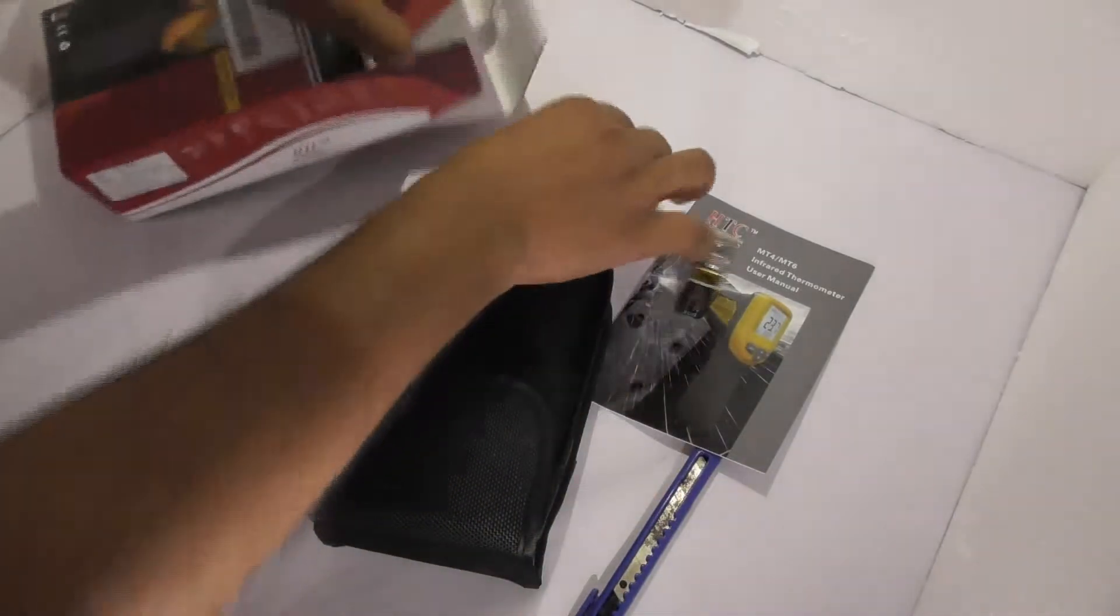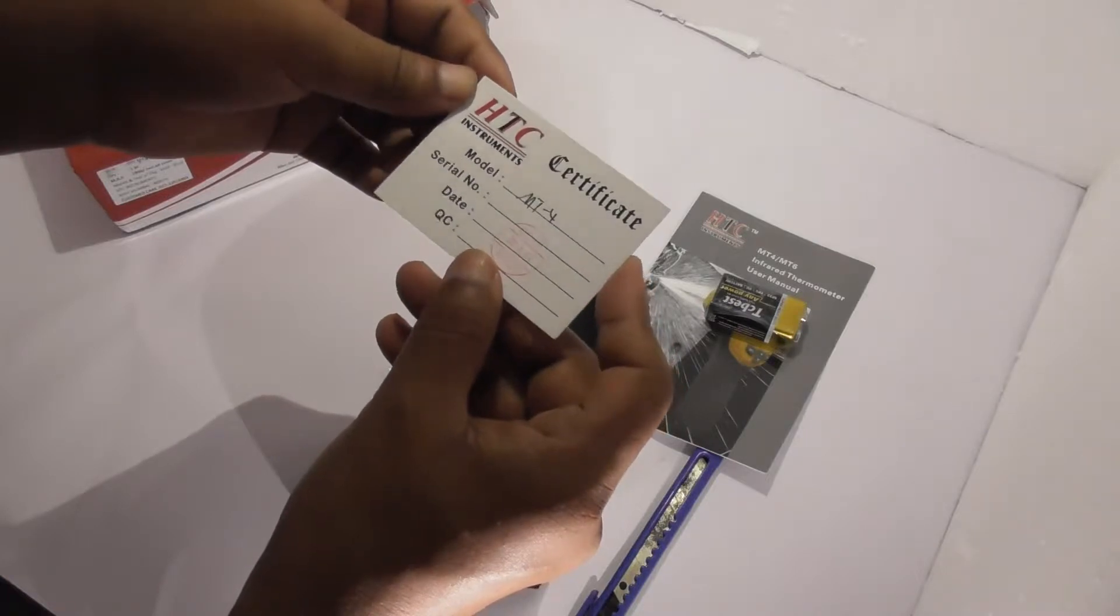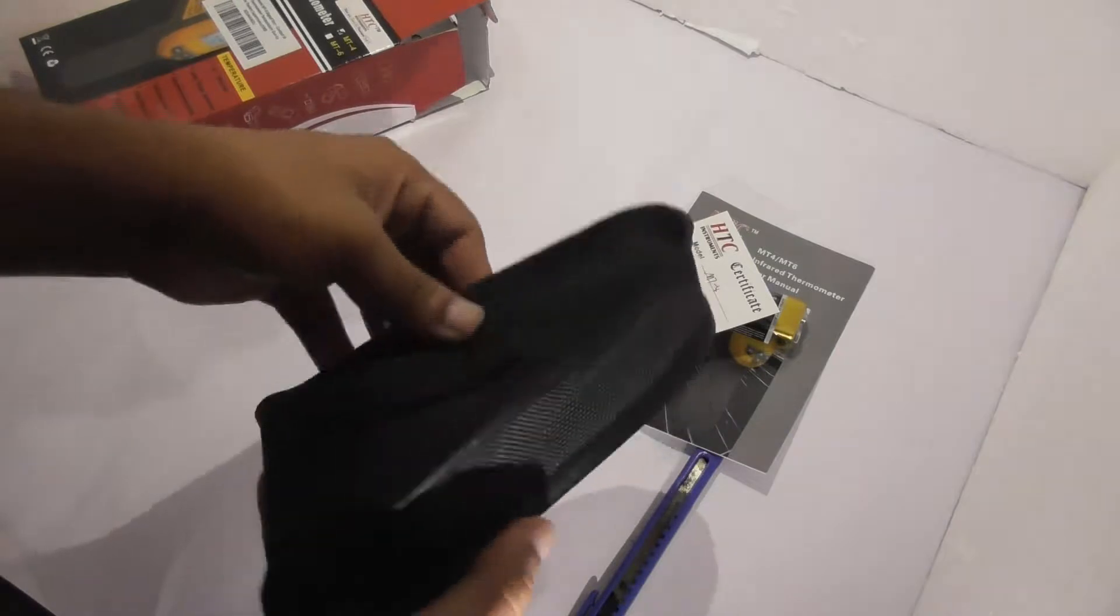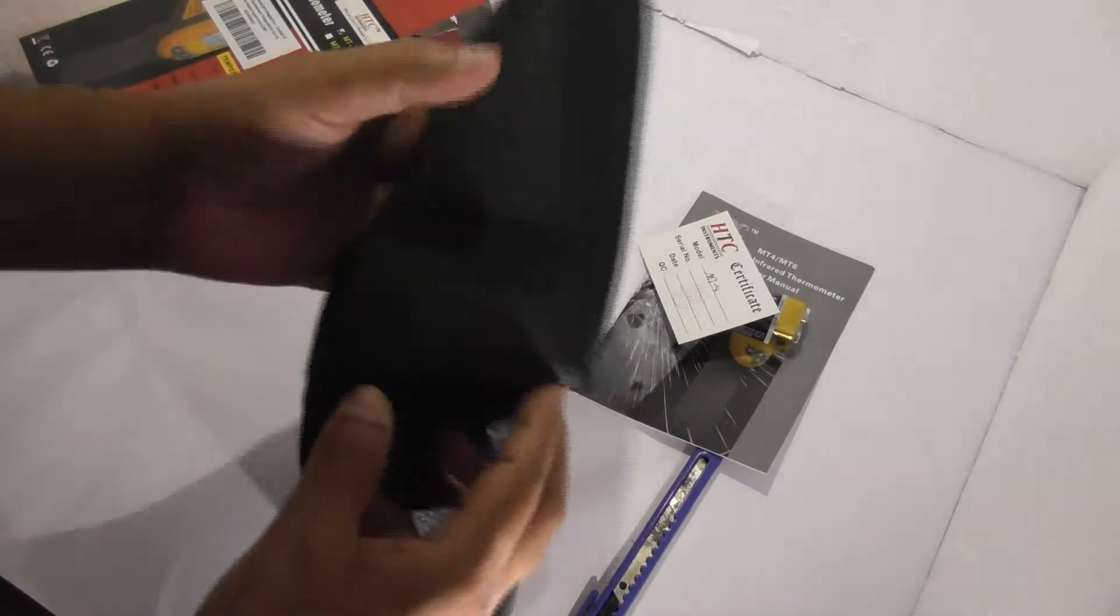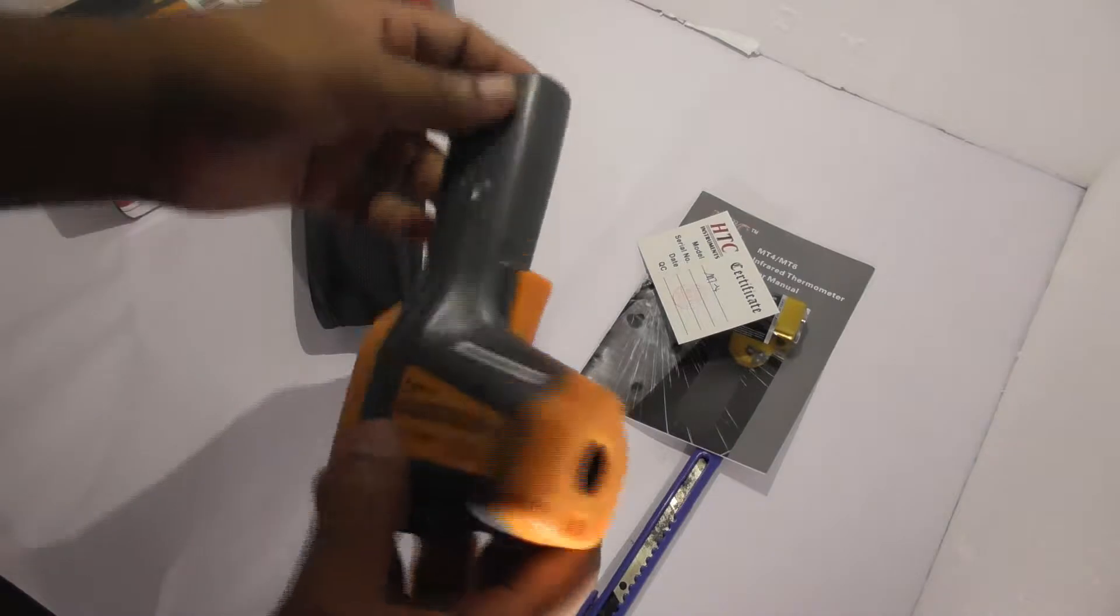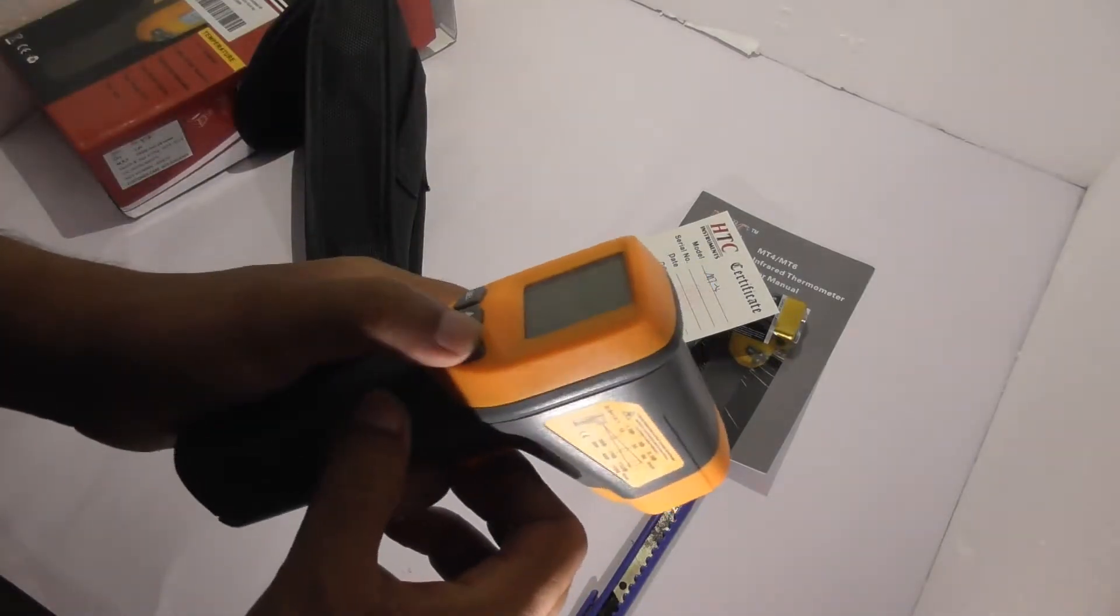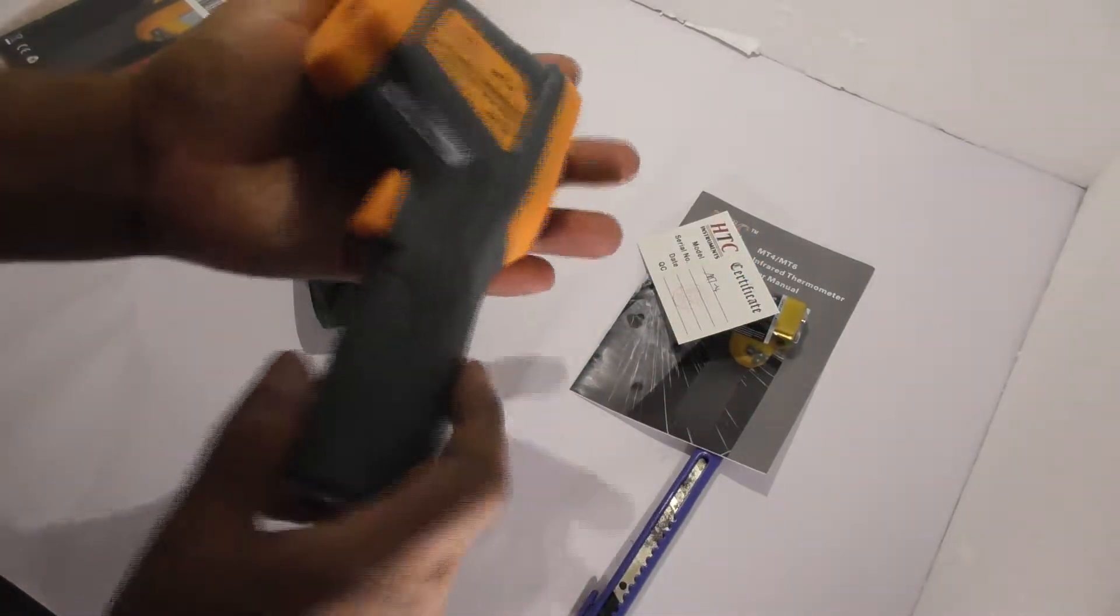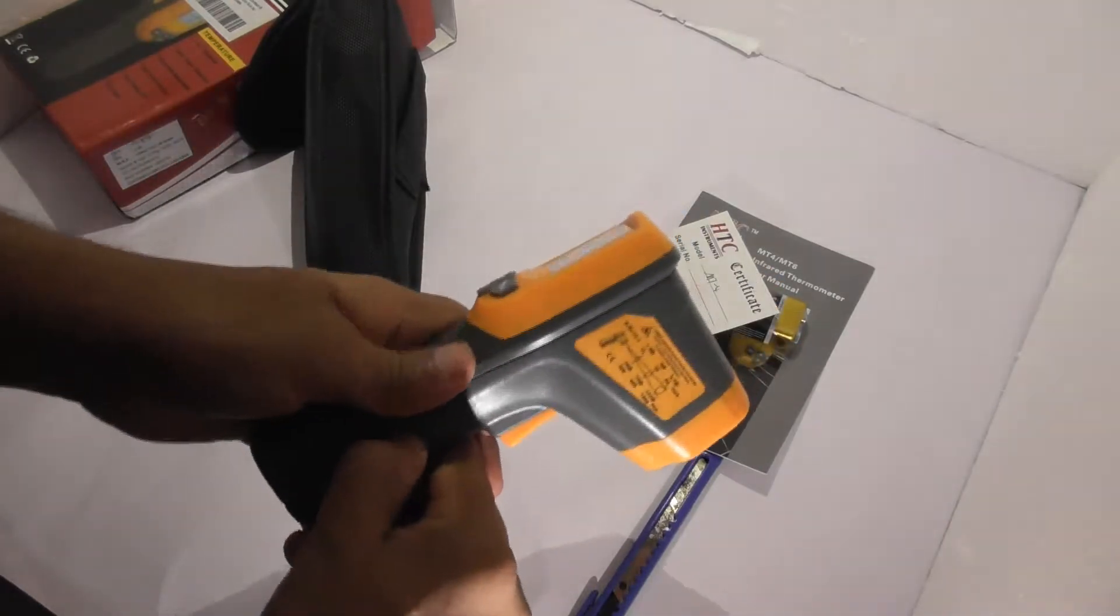Here is your HTC instrument certificate. Now let's see, it's already in a case. It's made of some sort of fabric. Okay, let's insert the battery and check whether it's working or not.